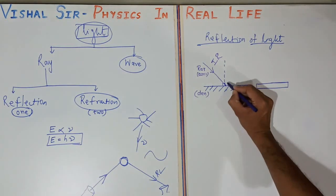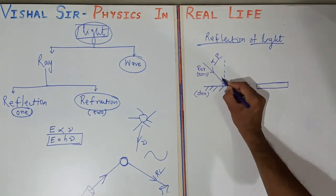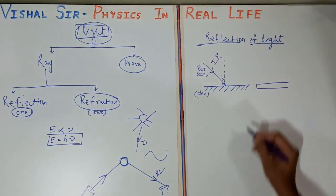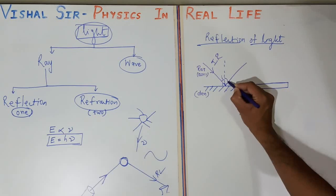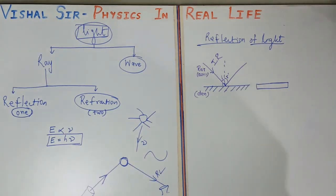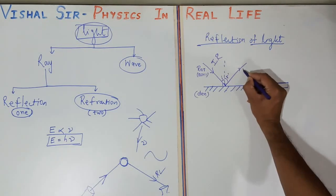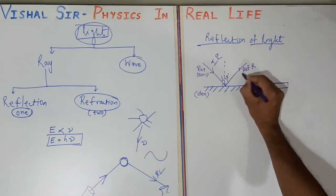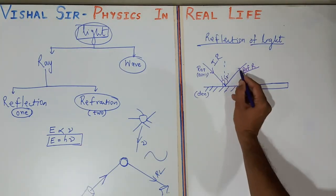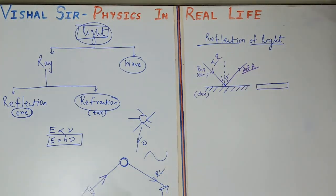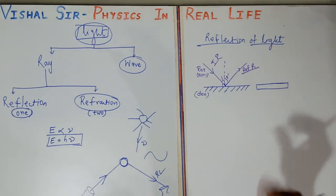The angle that the incident ray makes with the normal is called the angle of incidence. When light reflects back into the same medium making the same angle, that angle is called the angle of reflection, and the reflected beam is called the reflected ray. This entire process is called reflection of light.